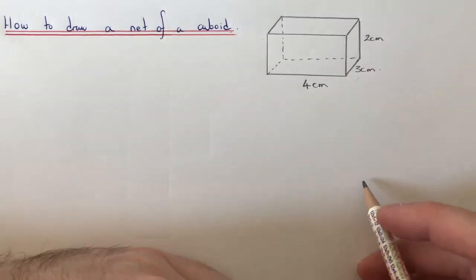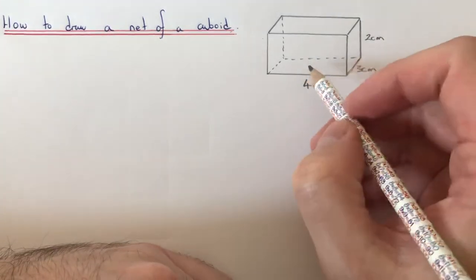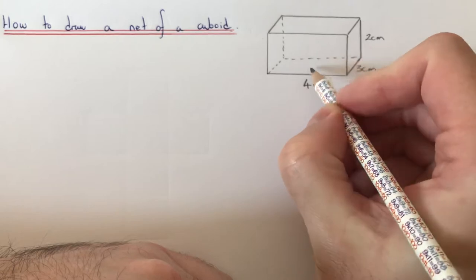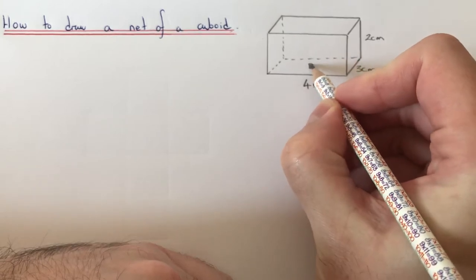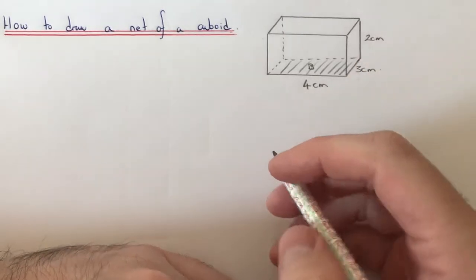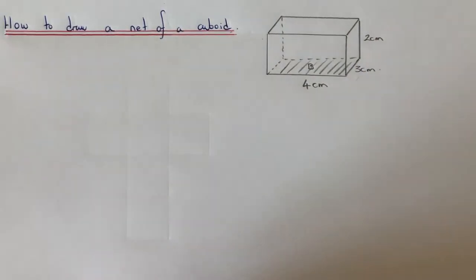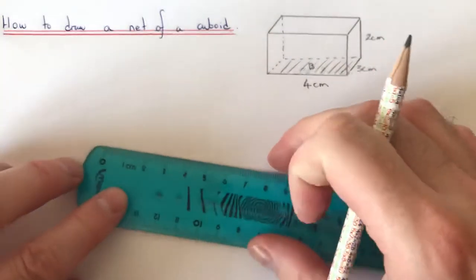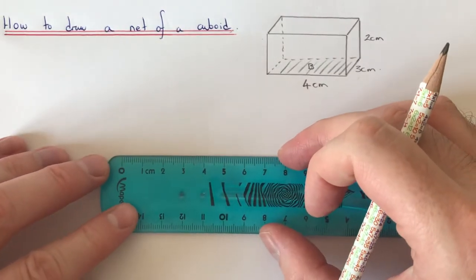So the best way to do this then is to start off with the bottom face. So I always draw this one first. So the bottom face is a rectangle which is four centimeters by three centimeters.